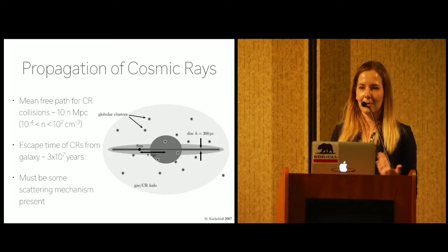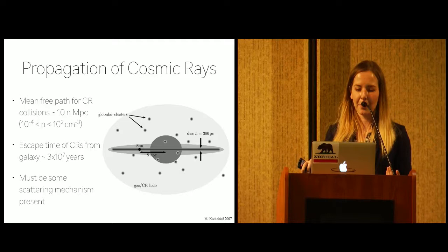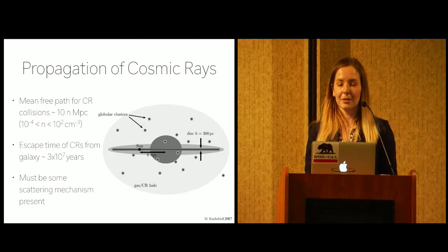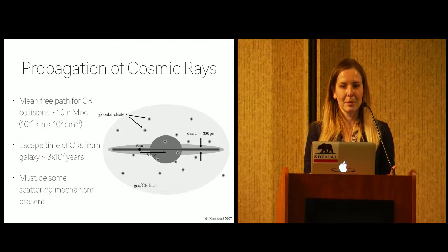So you might naively expect that once created, cosmic rays jump out of the galaxy and we shouldn't really care about them. But they're observed to have an escape time of roughly 30 million years, which means that there must be some sort of scattering mechanism present that keeps them inside the galaxy and keeps them interacting with the gas of the galaxy.